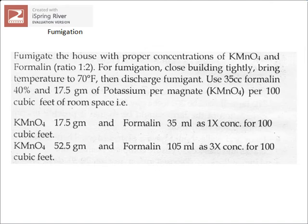Here is a glimpse of the fumigation procedure. The ratio between formalin and KMnO4 is 1:2 and the temperature is 70 degrees Fahrenheit. Mixing 35 cc of formalin with 17.5 g of potassium permanganate is enough for 100 cubic feet of room space at 1x concentration. For greater disinfection power — for example 3x — mix 52.5 g of KMnO4 with 105 ml of formalin, which is also sufficient for 100 cubic feet.